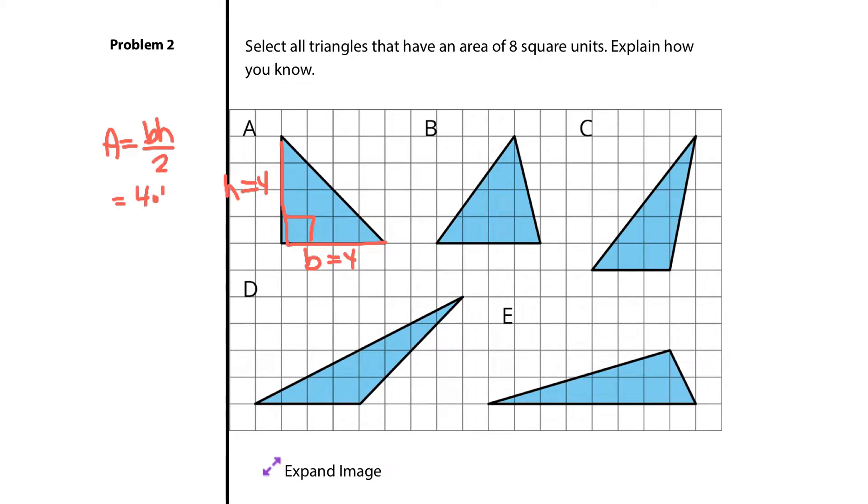I would get 4 times 4 divided by 2 is 16 divided by 2, which is 8 square units. So A works.